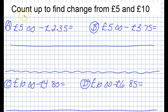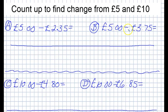In this video I'm going to show you how to count up to find change from five pounds and ten pounds. As you can see I've got two example questions here: five pounds subtract two pounds thirty-five, and the other example is five pounds subtract three pounds seventy-five.